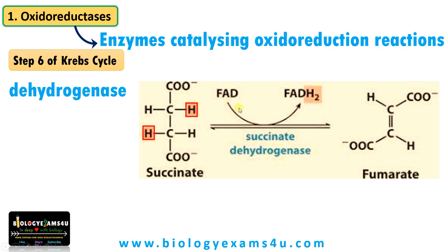This hydrogen is received by FAD, which becomes FADH2. Here FAD is reduced to FADH2 — a reduction reaction has happened. As hydrogen is donated by succinate, succinate is oxidized to form fumarate. So oxidation and reduction reactions are coupled. The enzyme is called dehydrogenase because hydrogen is removed from succinate. We will be discussing oxidation-reduction in terms of hydrogen, oxygen, and electron in another video.